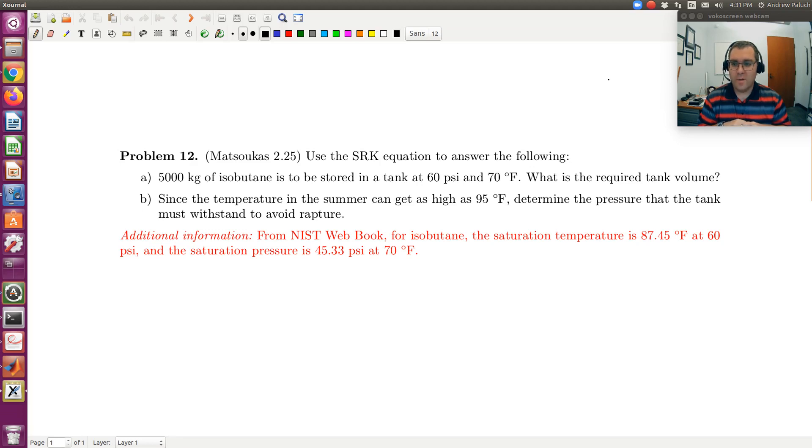So A, 5,000 kilograms of butane is to be stored in a tank at 60 psi and 70 degrees Fahrenheit. What is the required tank volume?